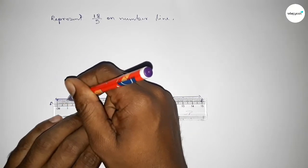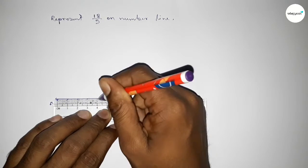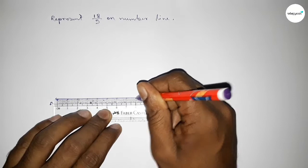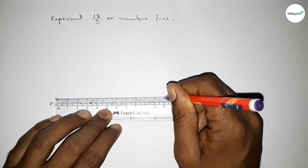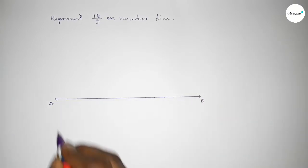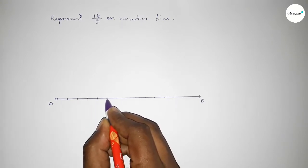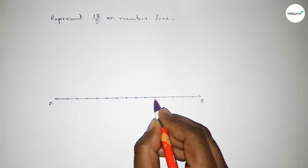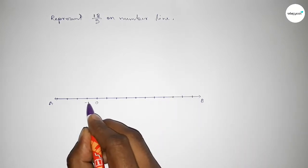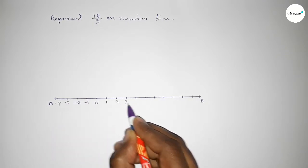Next we have to mark the numbers on the line by using a scale, by this way. So first marking the numbers on the line by using scale, and by this way we can draw the number line. Again marking the numbers with deep color to understand perfectly. Taking here starting number 0, this side minus 1, minus 2, minus 3, minus 4, and this side plus 1, 2, 3.